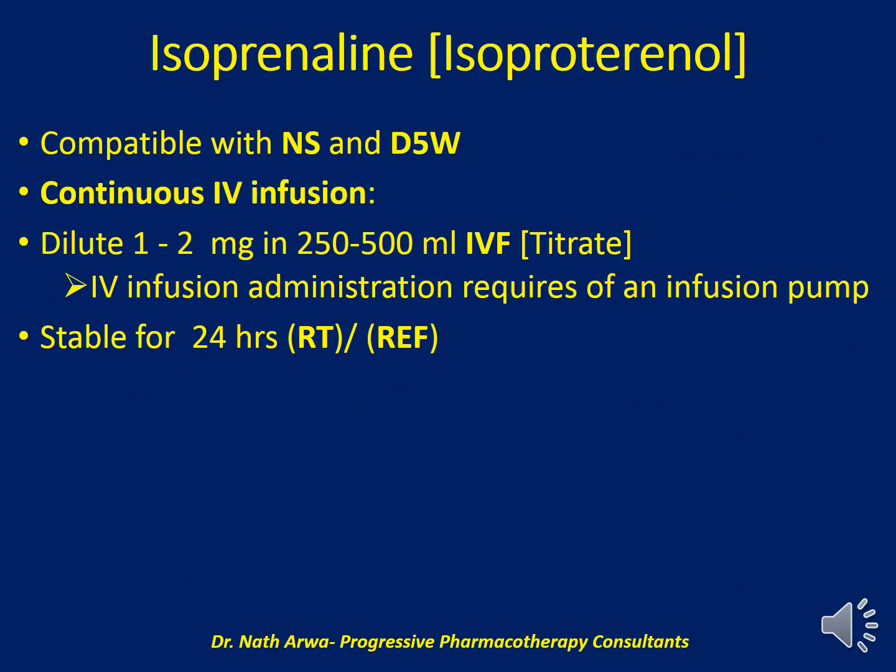Isoprenaline is compatible with both 5% dextrose in water and normal saline. For IV continuous infusion, 1 to 2 mg should be diluted in 250 to 500 ml of IV fluid, and the dose should be titrated according to protocol. The IV infusion requires the use of an infusion pump for accuracy. Such solutions are stable at room temperature and under refrigeration for 24 hours.